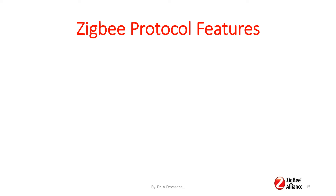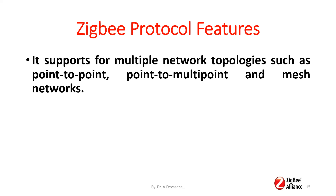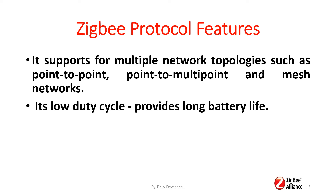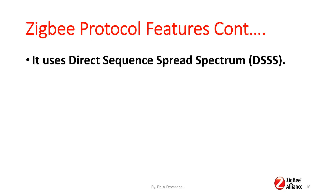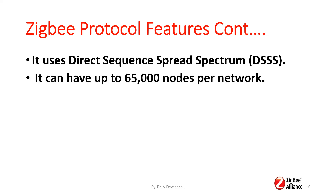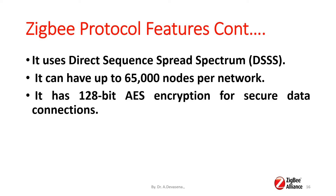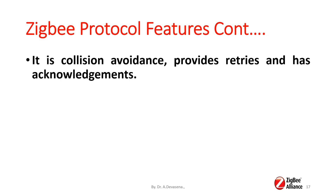Zigbee protocol features: It supports multiple network topologies such as point-to-point, point-to-multipoint, and mesh networks. Its low-duty cycle provides long battery life. It has low latency. Zigbee uses Direct Sequence Spread Spectrum. It can have up to 65,000 nodes per network. It has 128-bit AES encryption for secure data connections. It provides collision avoidance, retries, and acknowledgements.